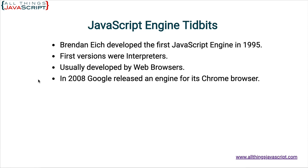In 2008, Google released an engine for its Chrome browser called the V8 engine. It was the first engine to use just-in-time compilation, and therefore it was much faster. So all the other browser developers had to catch up with the V8 engine and work on their own engines to make them just as fast.